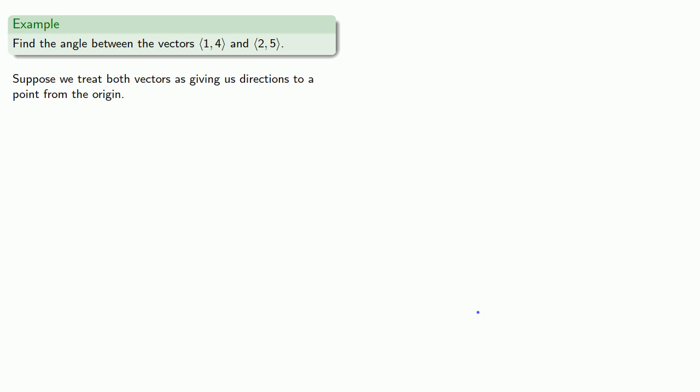And remember, if it's not written down, it didn't happen. Let's label the origin. So (1,4) will take us to the point with coordinates (1,4).